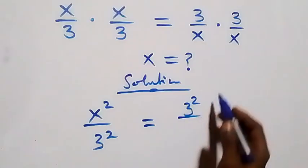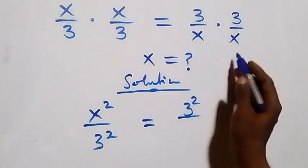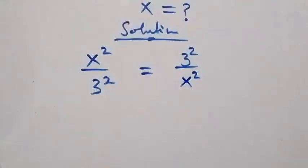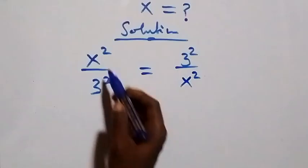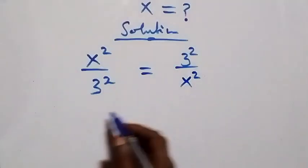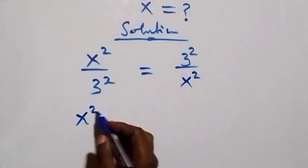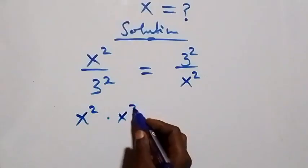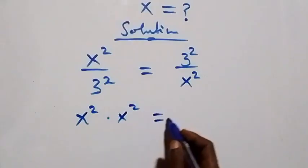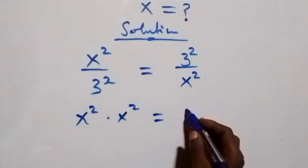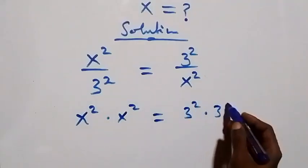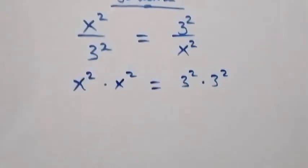Then divided by x times x plus x squared. The next step here, we cross multiply: x squared times x squared on this side, then equals three squared times three squared on the other side.